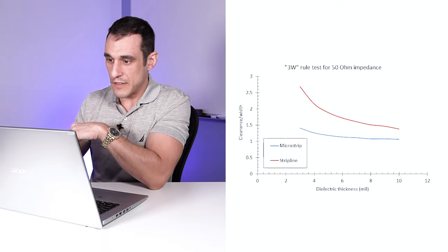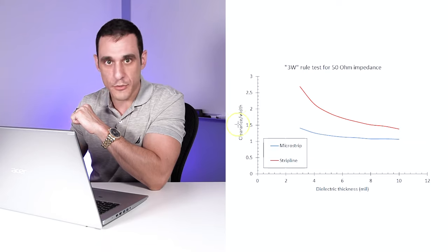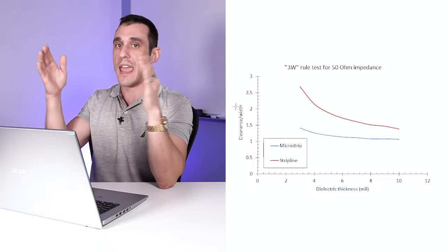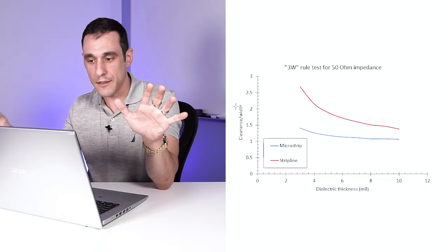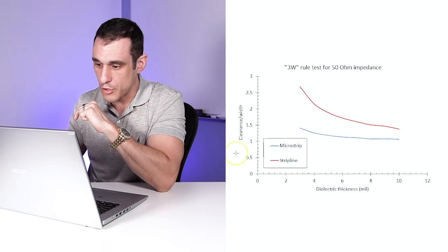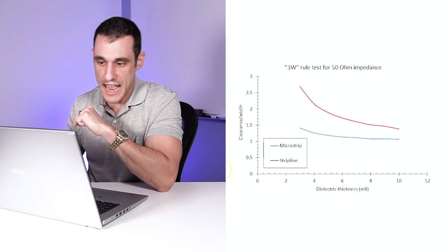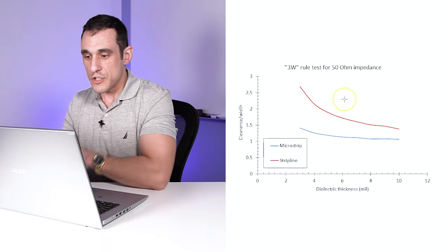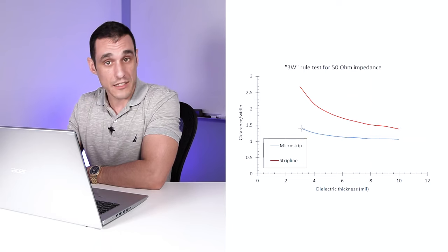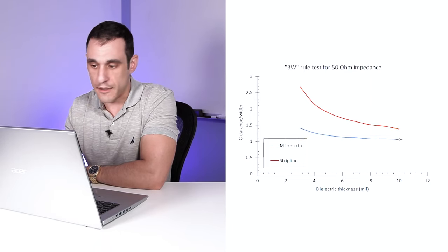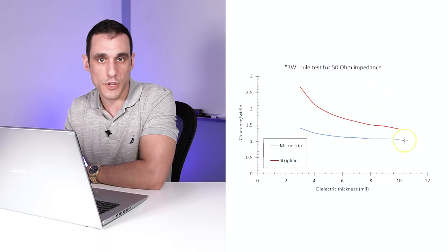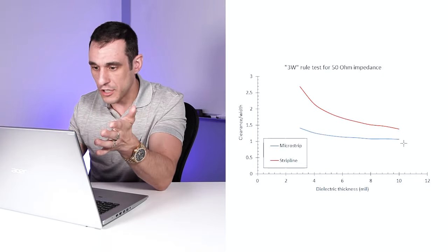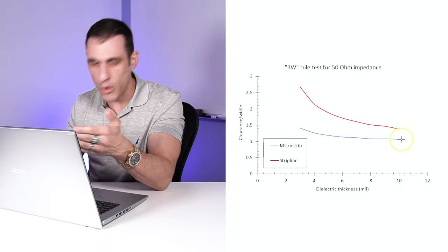In this next graph, I've looked at the clearance-to-width ratio: what is the clearance between the edge of the trace and the ground pour nearby? Looking at this ratio for different dielectric thicknesses lets you see exactly when you can violate the 3W rule and still maintain 50 ohms impedance. For a microstrip, you can actually get a lot of violation — even at high layer thickness of 10 mils, the clearance-to-width ratio gets down to about 1.1. So if your width is 10 mils, your clearance would be just a little bit more than that, about 11 mils.